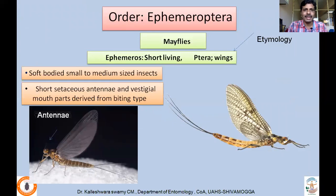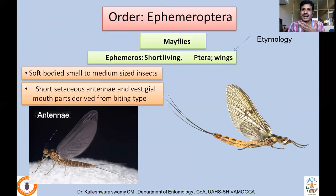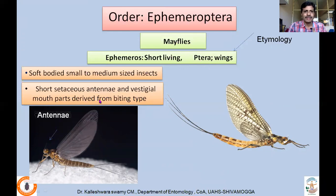We will take them one by one. Order Ephemeroptera — commonly called mayflies. Etymologically, Ephemeroptera means short-lived. Ephemera means short-lived; ptera means wings. Why this name? Adult mayflies live for a very short period — about 6 to 10 hours, up to a day, maximum a week depending on the species. The name is derived from the adult lifespan, which is very short — that is why they are called mayflies. They are soft-bodied insects, small to medium-sized, measuring about half a centimeter to a maximum of two to three centimeters.